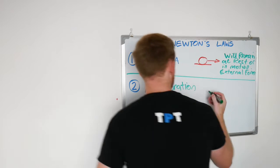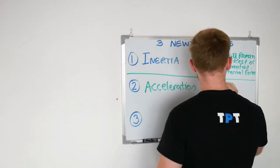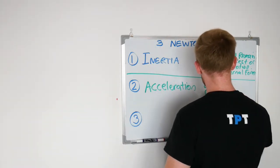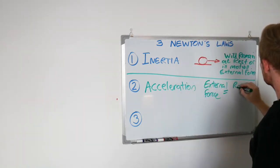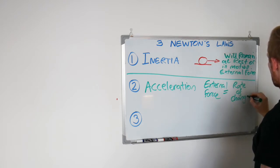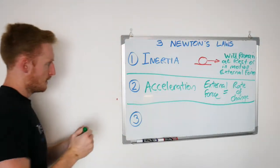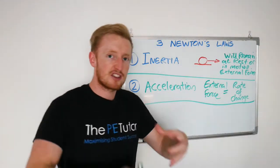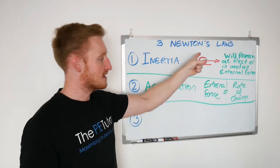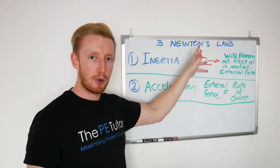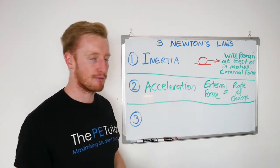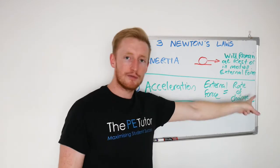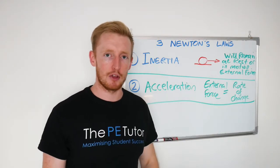So if I just put here, external force equals rate of change. So the law of acceleration, the size of the external force that comes into contact or acts upon the body or object that we're talking about, the size or magnitude of that force is proportionate to the rate of change experienced by the body of the object.